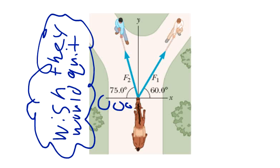Take F1 is 146 newtons and F2 is 79 newtons. So, find the single force that is equivalent to the two forces shown above, is question A. Question B says, find the force that a third person would have to exert on the mule to make the net force equal to zero.